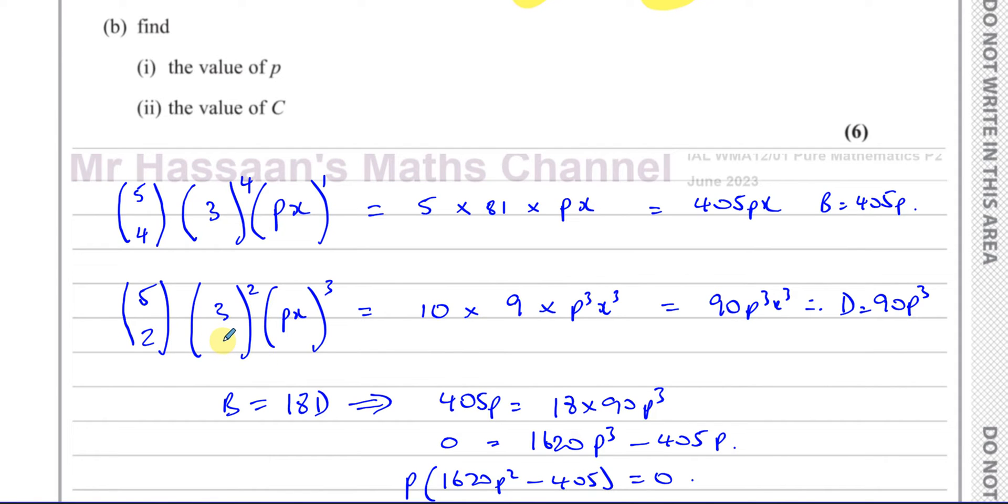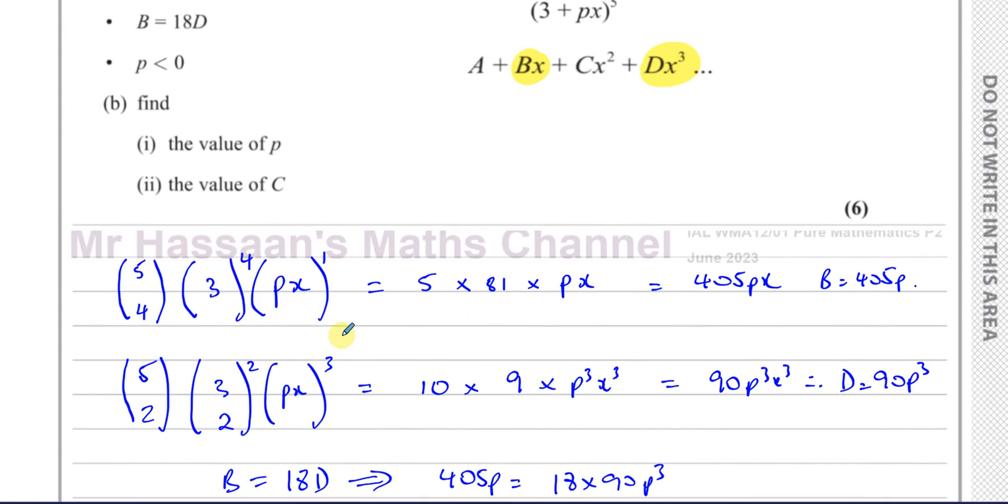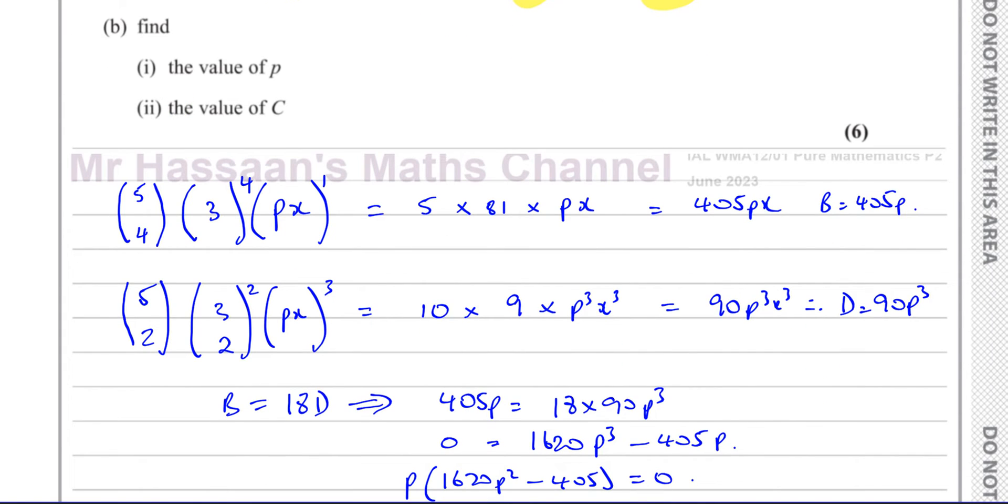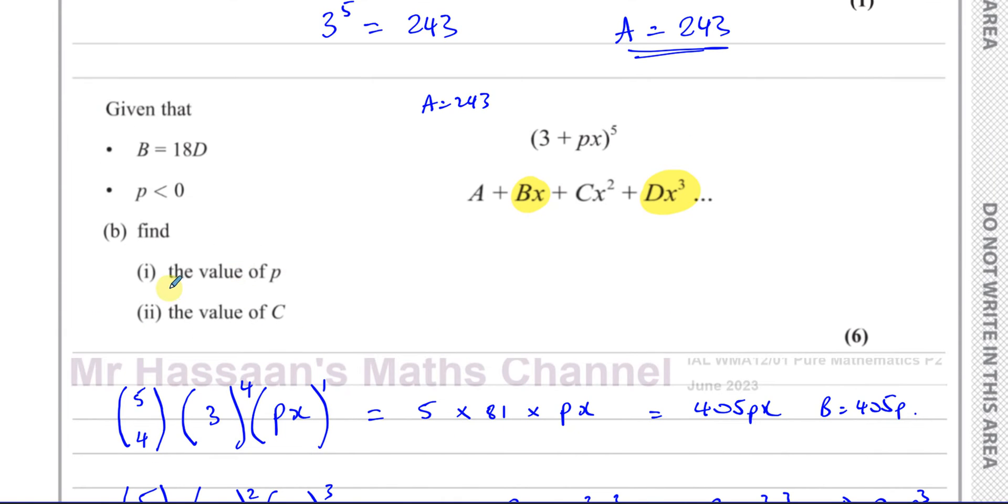Now we know that because they told us here, p is less than 0. So now we've got values of p which are 0 and plus or minus a half. So therefore we can say p must equal negative a half because p is less than 0.